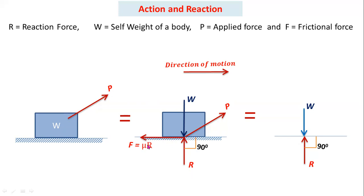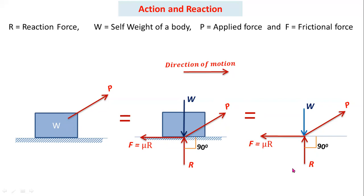Frictional force always acts parallel to the support. Here the support is horizontal, so you have to consider horizontal friction only. The direction of frictional force is always opposite to the direction of motion. The direction of motion is to the right side, so friction acts to the left. This is the final free body diagram. By using these free body diagrams, you can calculate unknown values: mu, W, frictional force F, or P.